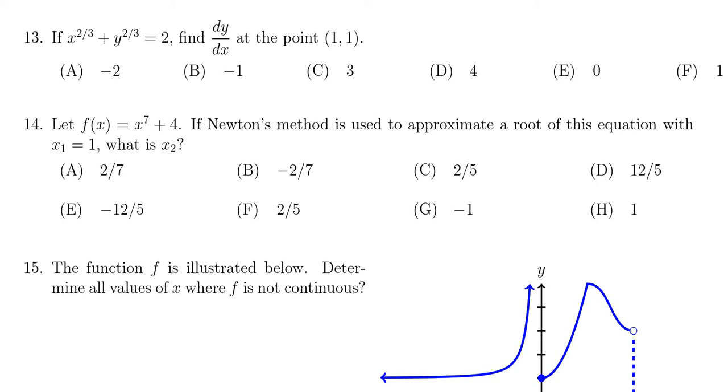We're given the curve x to the two-thirds power plus y to the two-thirds power is equal to 2. We're asked to find the derivative, that is dy over dx, at the point (1,1).